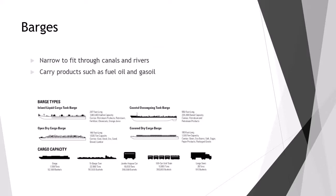Moving on to barges — barges are designed to fit through canals and rivers. The River Rhine can't accommodate cargo ships; it's too narrow and the water too shallow. So transport up and down the river is done by barges. A typical barge will be 1,500 tons (1.5 kt), and the larger ones 22,500 tons (22.5 kt). You'll see these going up and down rivers throughout key areas in the world.